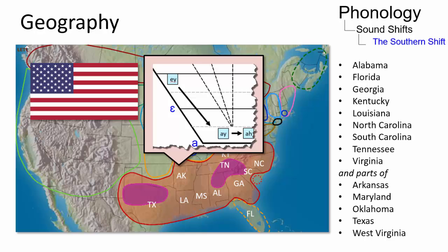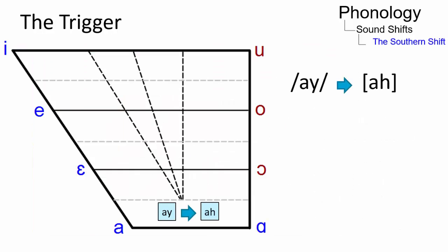In most of these states, the triggering movement is a monotonization of /ay/, with the result that words like hide or rise sound more like hahd or rahs.